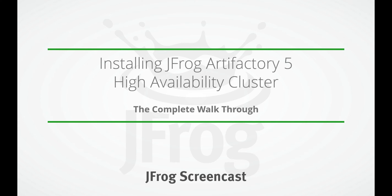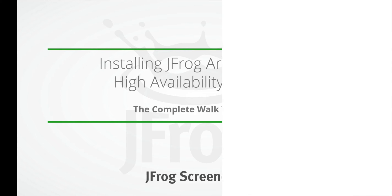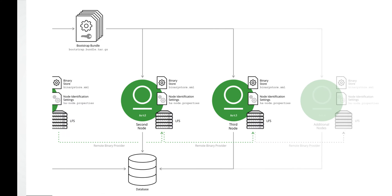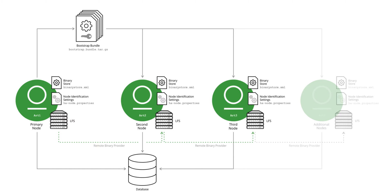Hi and welcome to the screencast. Today we'll demonstrate the Artifactory 5 high availability cluster installation process containing three nodes using a local file store on each node and having no shared file store. Our cluster storage will have double storage redundancy, which means Artifactory will create two physical copies of any single binary across your cluster.